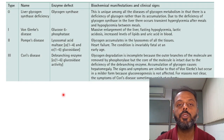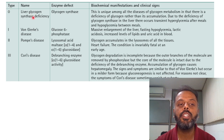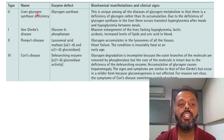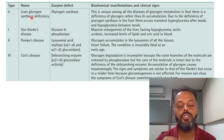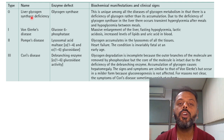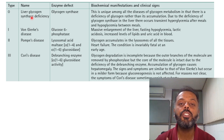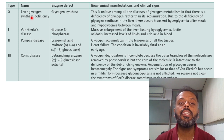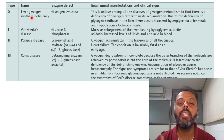The first type is Type 0, known as liver glycogen synthase deficiency. As the name suggests, there is a deficiency of the glycogen synthase enzyme. This is unique among all diseases of glycogen metabolism because it is characterized by a deficiency of glycogen rather than its accumulation, with episodes of transient hyperglycemia after meals and hypoglycemia between meals.